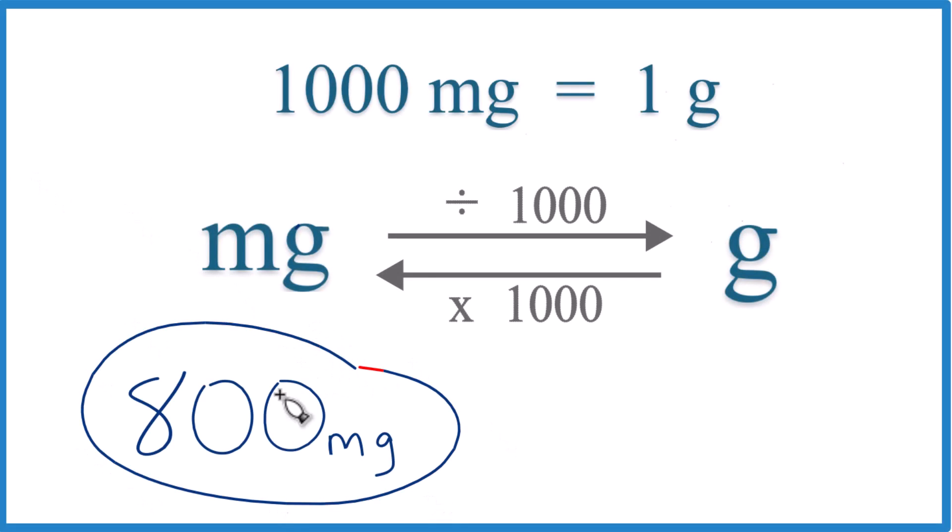Let's convert 800 milligrams to grams. To do that, we know that 1000 milligrams equals 1 gram, or 1 gram equals 1000 milligrams. That's our conversion factor, and we need that when we go from milligrams to grams or grams to milligrams.